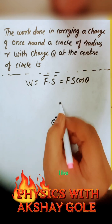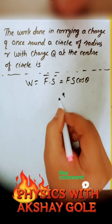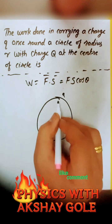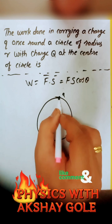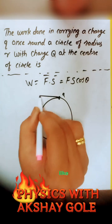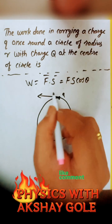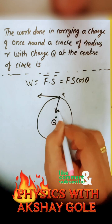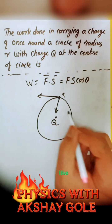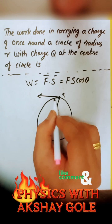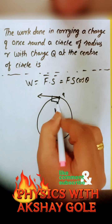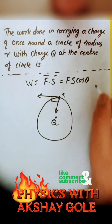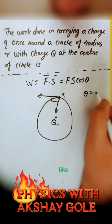Consider charge capital Q at the center, and charge small q is revolving around it in a circular orbit. The instantaneous displacement of charge q is in the tangential direction, and the centripetal force of attraction acting on charge small q is directed toward the center. So the angle between the force and displacement is 90 degrees.